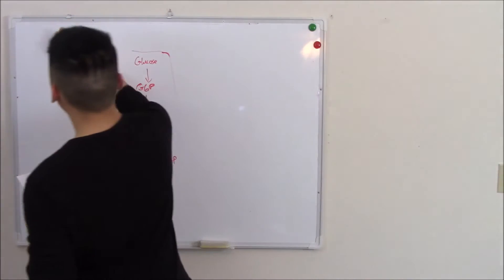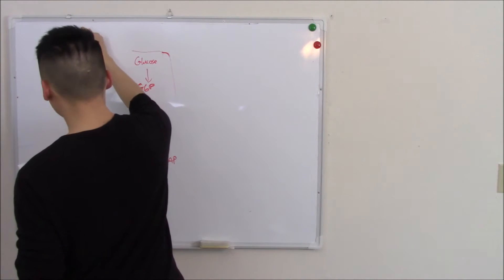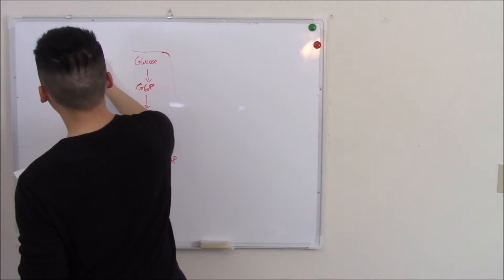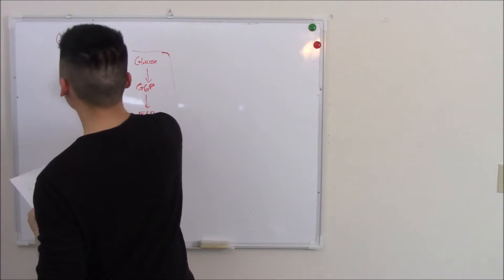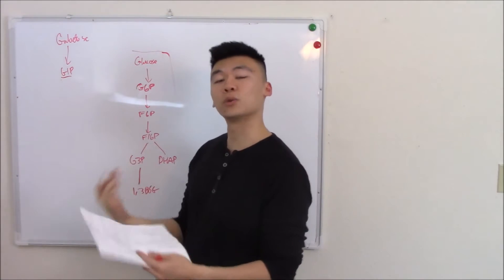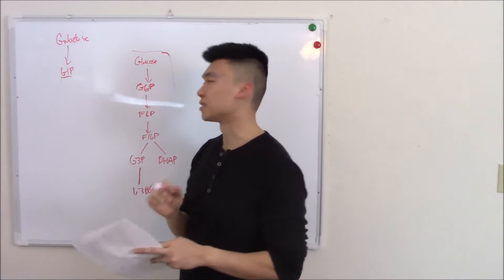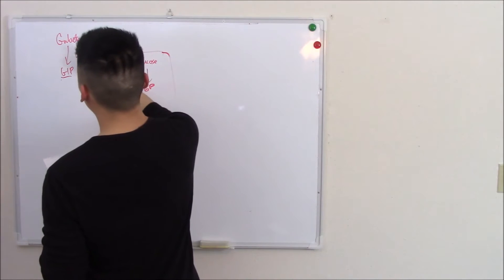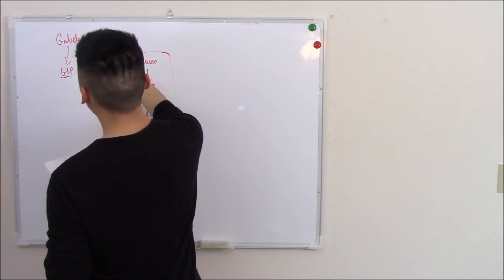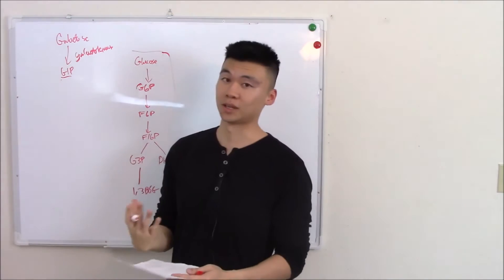So galactose immediately gets phosphorylated to galactose 1-phosphate. Why do we do that? It's to trap it in the cell, correct? And the thing that does it is galactokinase, ring a bell.